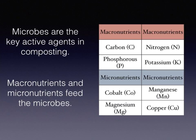Microbes are the key active agents in composting. The macronutrients of carbon, nitrogen, phosphorus, and potassium feed the microbes. The micronutrients such as cobalt, manganese, magnesium, and copper also feed the microbes. So composting can be viewed as simply feeding the microbes.